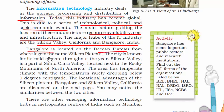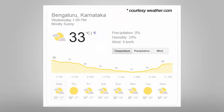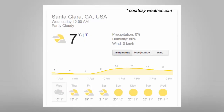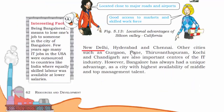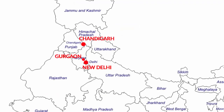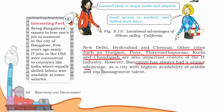Bangalore is located on the Deccan Plateau and gets the name Silicon Plateau. Silicon Valley is part of Santa Clara Valley, next to the Rocky Mountains of North America. These two are ideal places with ideal climates in their respective countries. In India, Bangalore has an awesome climate despite being in the tropical region — it's neither too warm nor too cold. Silicon Valley is located in the temperate zone and also faces neither too cold nor too warm temperatures. In India, places like Mumbai, New Delhi, Hyderabad, and Chennai are the hubs of the IT sector. Other cities such as Gurgaon, Pune, Thiruvananthapuram, Kochi, and Chandigarh are coming up. Bangalore has always had a unique advantage because it has the highest availability of middle and top management talent.